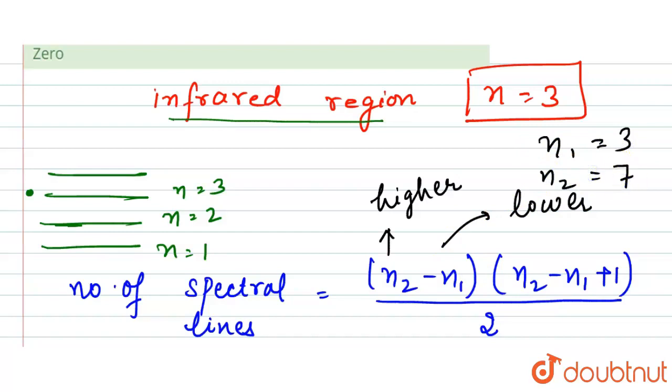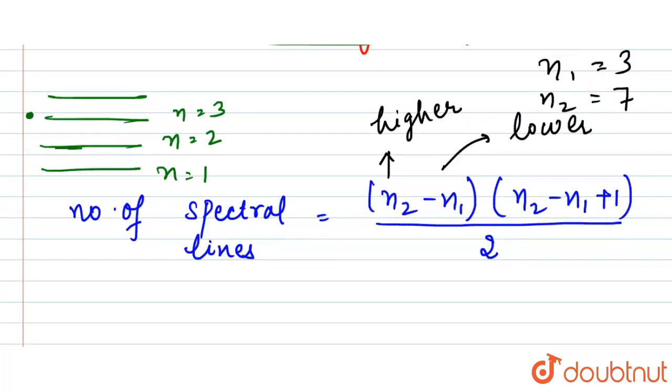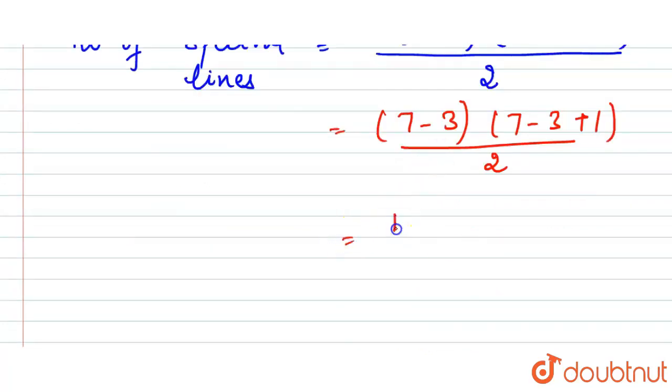So let's put up the values. Here what we will have: n2 is 7 minus 3, here we will have 7 minus 3 plus 1, divided by 2. Here it will be 4, here it will be 5 times 5 by 2, that is equal to 10.